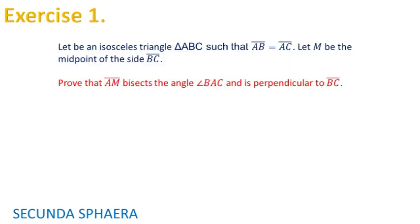Our first exercise says, let be an isosceles triangle ABC such that the sides AB and AC are equal. Let M be the midpoint of the side BC.